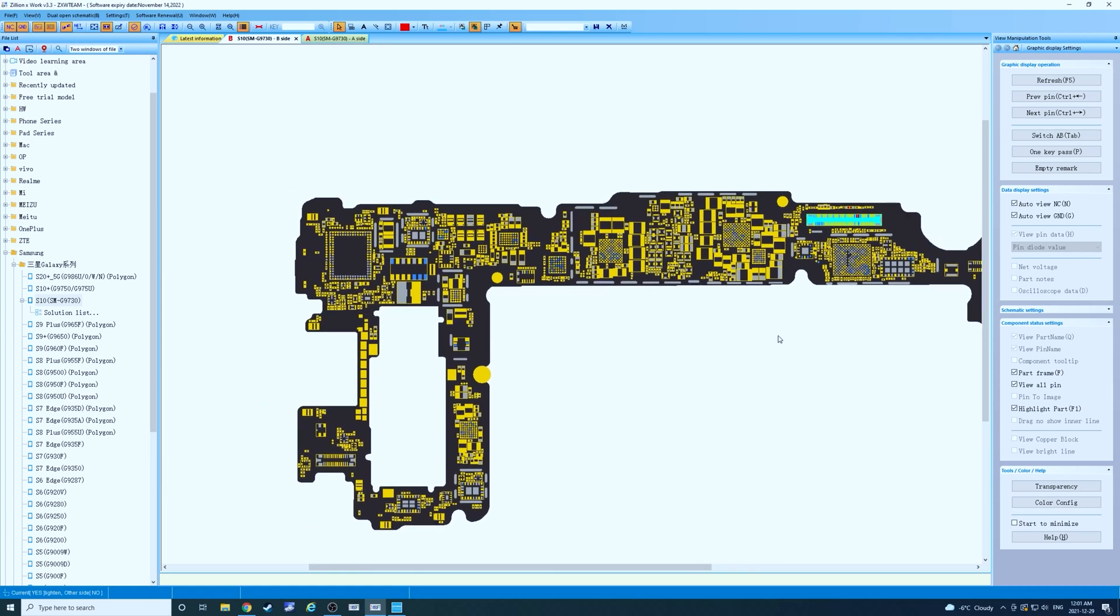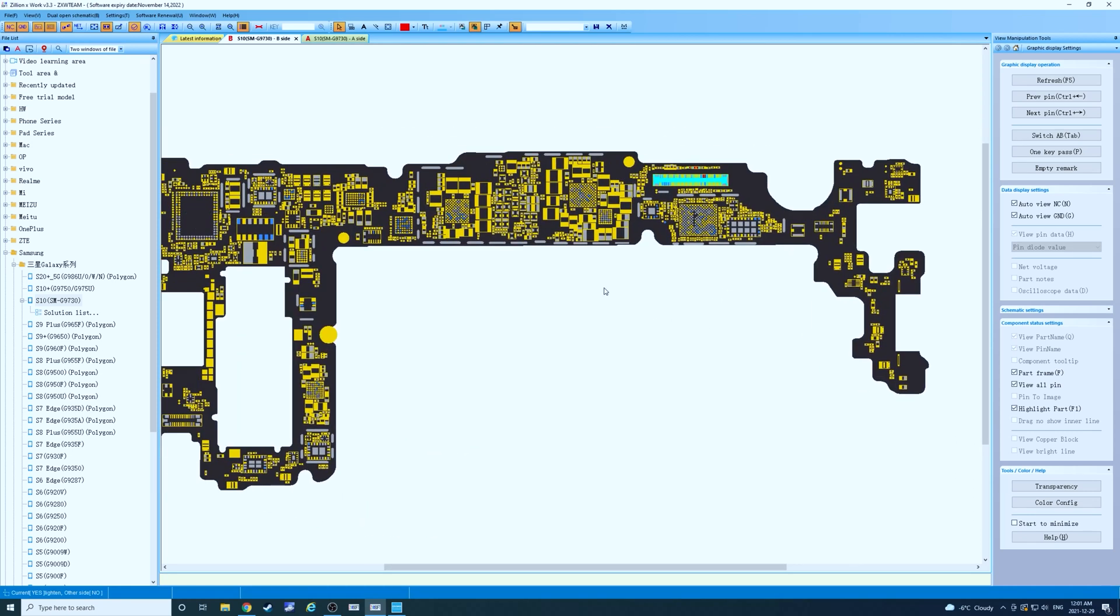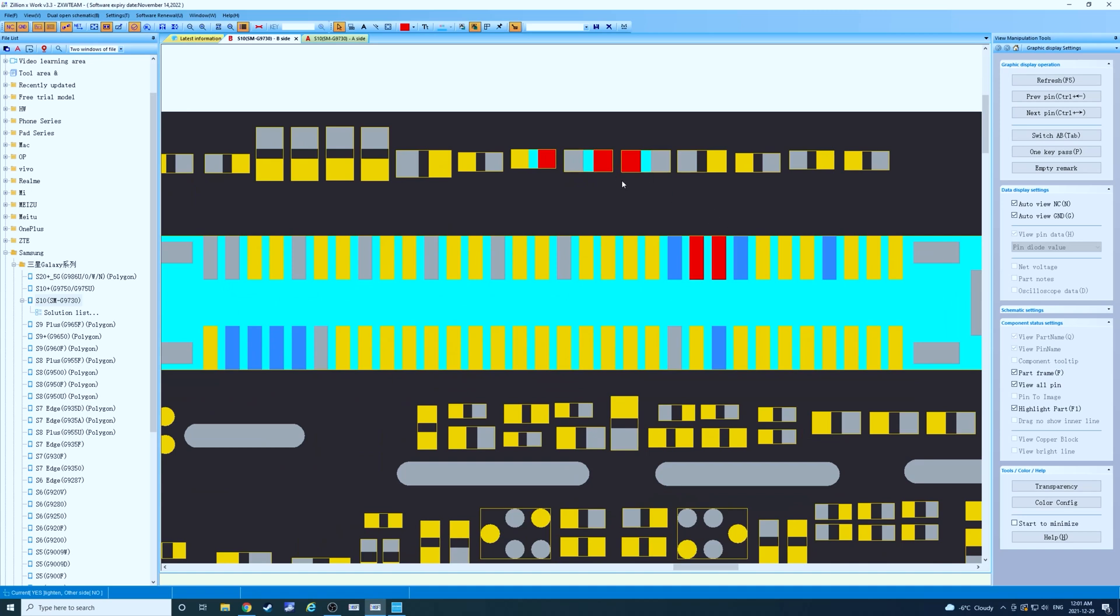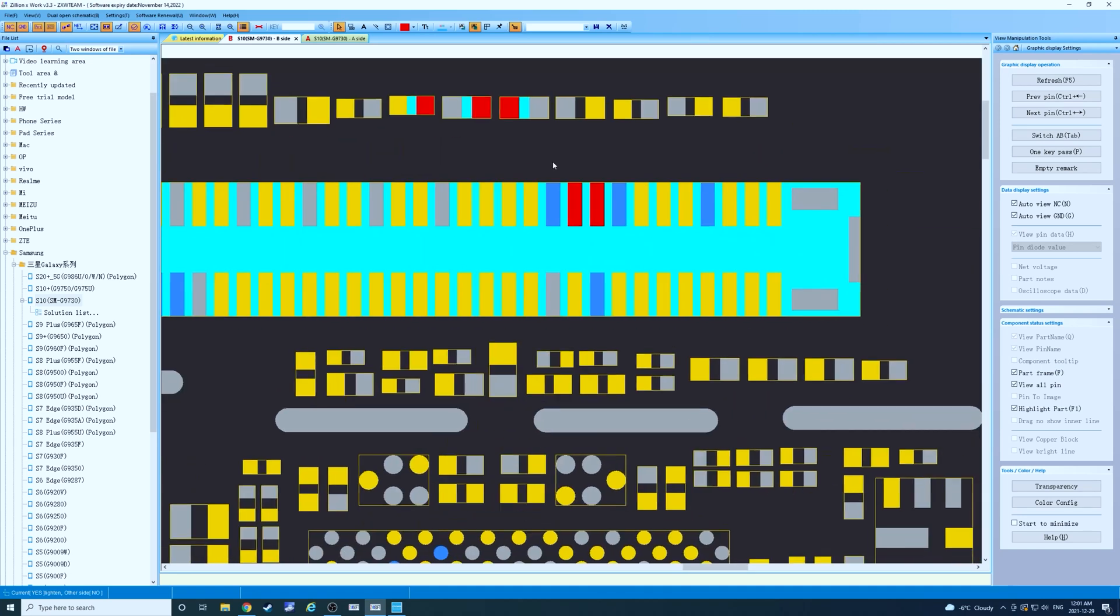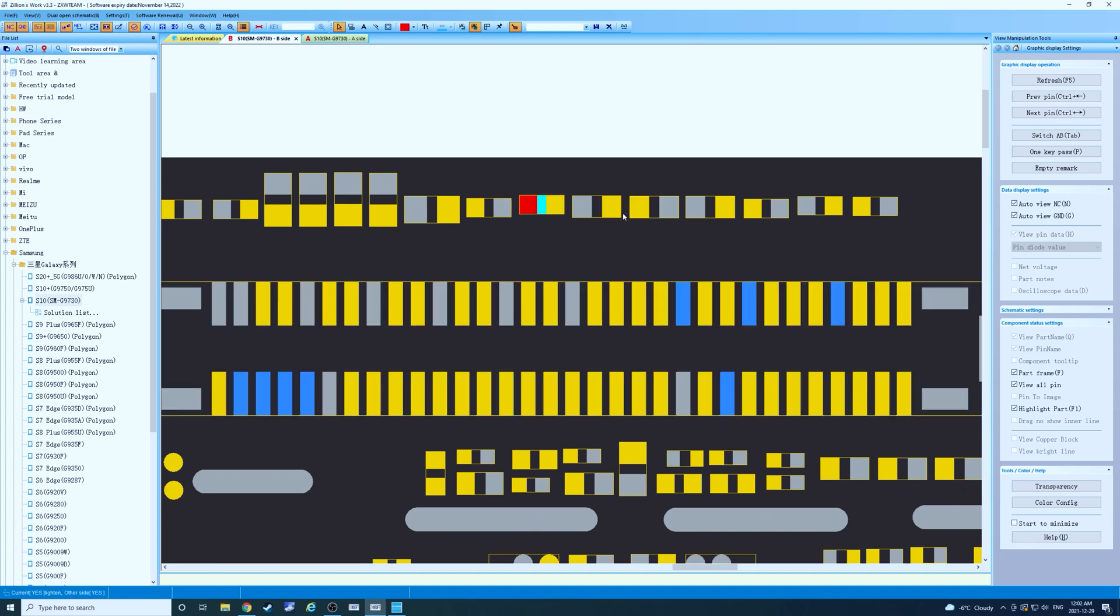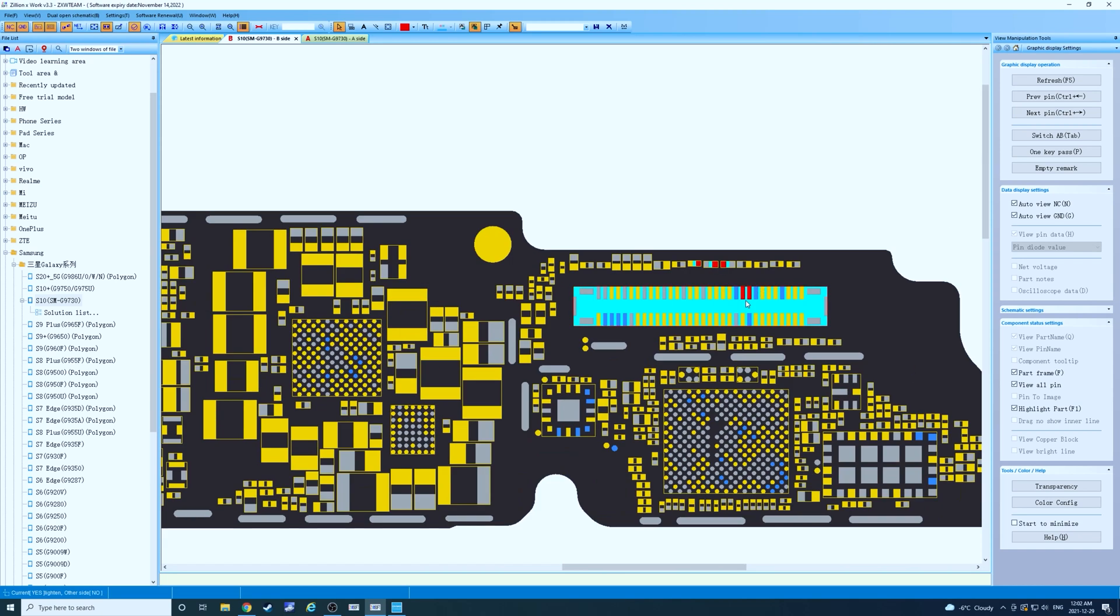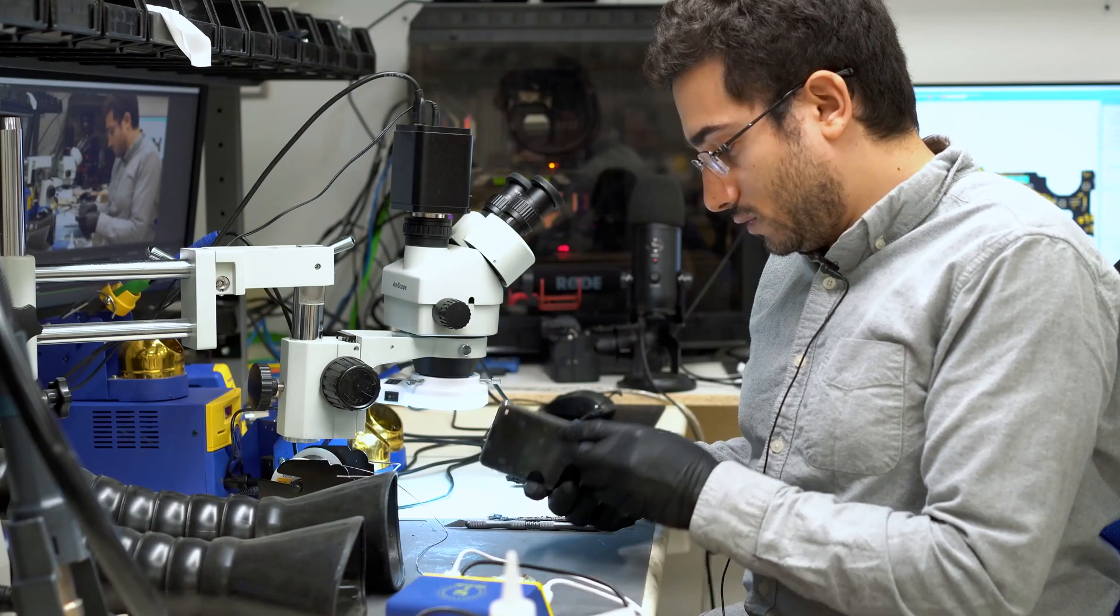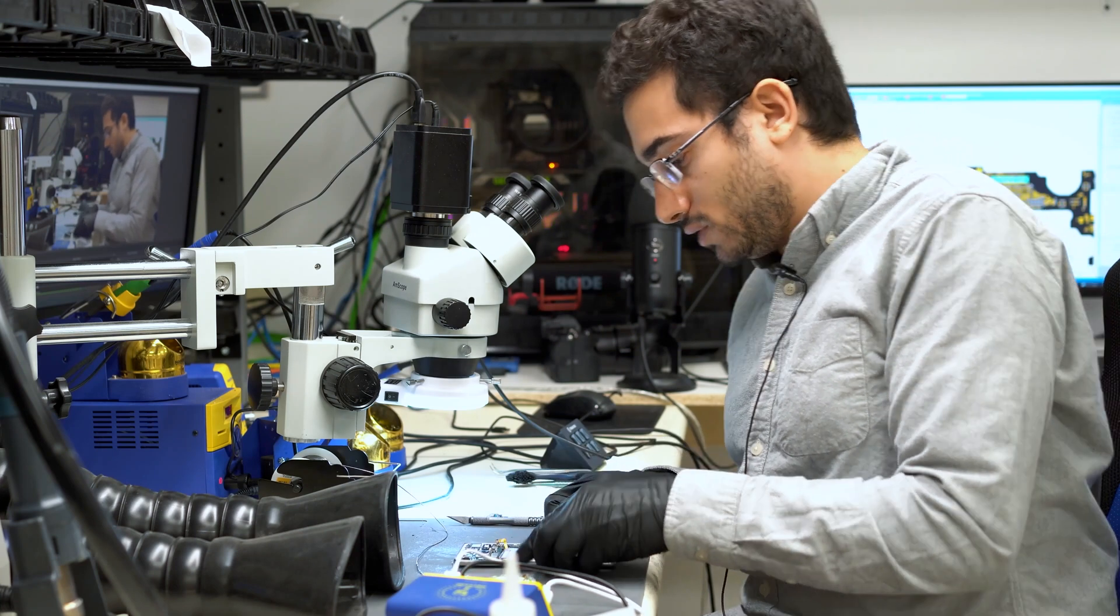We didn't notice any obvious corrosion, but we did notice on the LCD connector there was a trace here that was completely burnt away. All we had to do was repair those traces. We took some measurements and did the necessary repairs to the connector. And then the phone booted right up and we have a path to data.